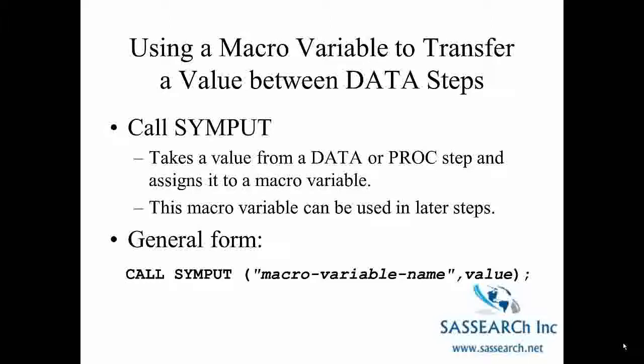SYMPUT is a routine that you call inside a data step to produce a global macro variable. The variable cannot be referenced inside the data step it was created in. The data step must end with a run statement before you can reference the variable in your code. The value of the macro variable is assigned during the execution of the data step.